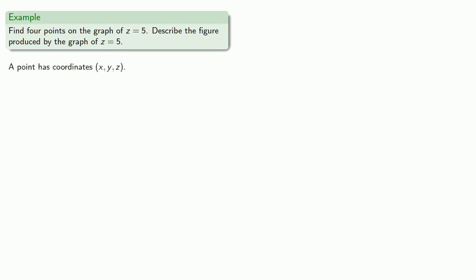So remember, a point has coordinates x, y, and z, and it's on the graph if z is equal to 5. So as long as our z-coordinate is 5, any one of these points will be on the graph. So let's pick random values for the x and y-coordinates. And you can pick whatever values you want as long as your z-coordinate is 5.